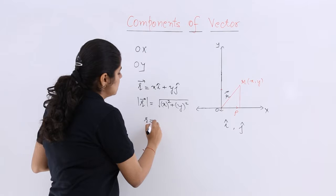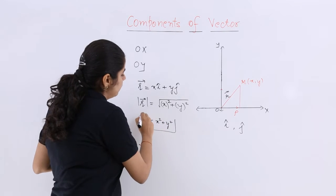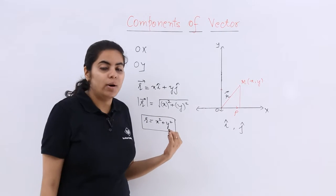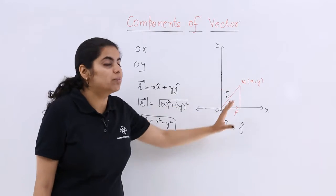So I can write r is equal to x square plus y square where r is the point which I am talking about. It is nothing but the resultant.